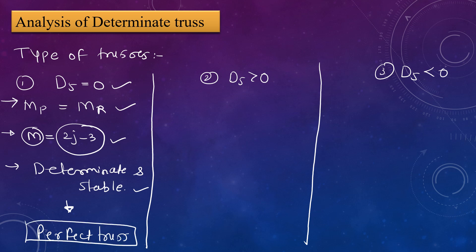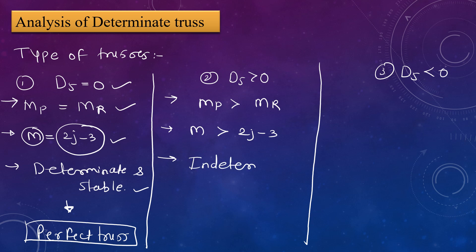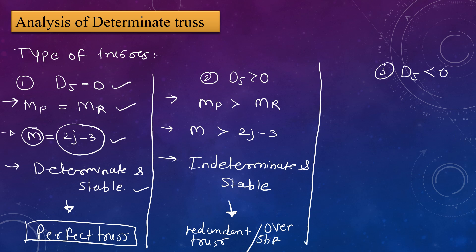The second condition: if DS is greater than 0, then member provided is greater than member required, meaning members exceed 2J − 3 (where J is the number of joints and M is the number of members). In this case, the structure is indeterminate and stable. This truss is known as a redundant truss, also called an overstiff truss.